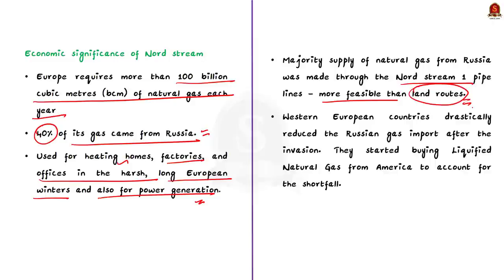This shows the economic significance of the Nord Stream pipeline. Note that Western European countries drastically reduced Russian gas imports after the invasion of Ukraine by Russia. They started buying liquefied natural gas from America to account for the shortfall. With this, we have come to the end of the Nord Stream pipeline discussion.